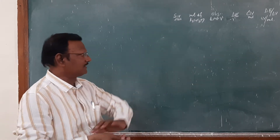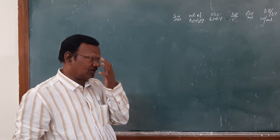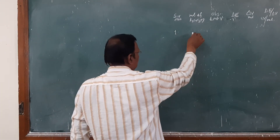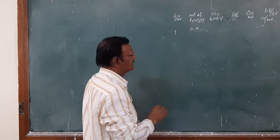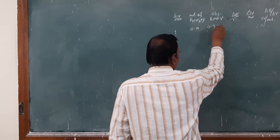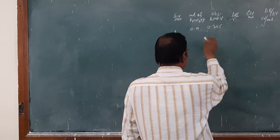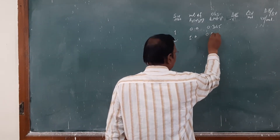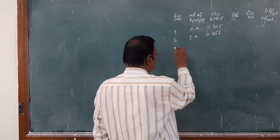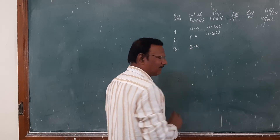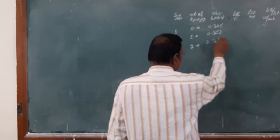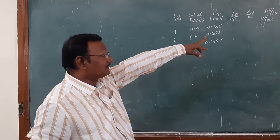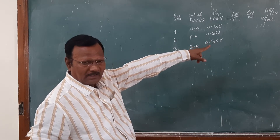See this observation table for yourself and put it in your record book — that is the journal. First reading: without addition of the potassium dichromate solution, we have to observe 0.345 volts. Then at 1.0 mL addition, we obtain the reading 0.351 volts. Third reading at 2.0 mL, we obtain 0.365 volts — readings are in increasing order. We have to calculate delta E, delta V, and the ratio of delta E by delta V in volts per mL.